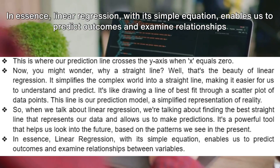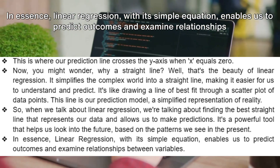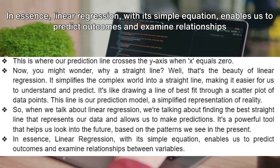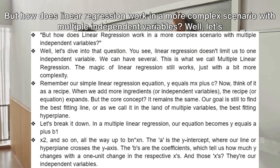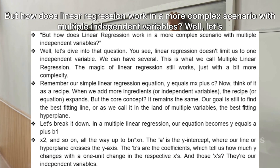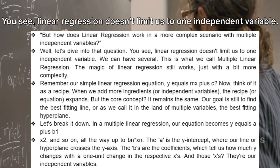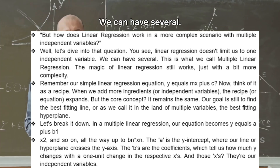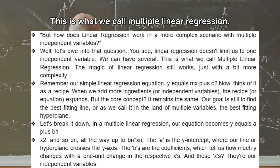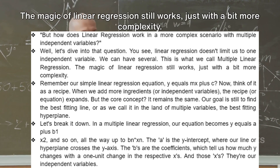In essence, linear regression with its simple equation enables us to predict outcomes and examine relationships between variables. But how does it work in a more complex scenario with multiple independent variables? Linear regression doesn't limit us to one independent variable — we can have several. This is what we call multiple linear regression. The magic of linear regression still works, just with a bit more complexity.